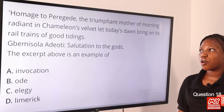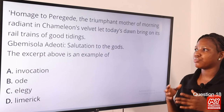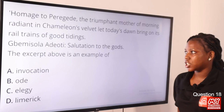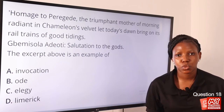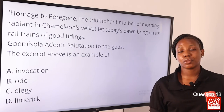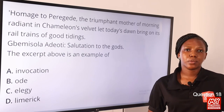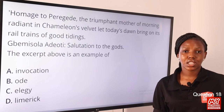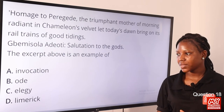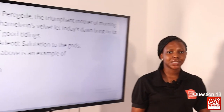Moving on to question 18. 'Homage to Perekwede, the triumphant mother of morning radiance in chameleon's velvet. Let this dawn bring on its real trains of good tidings.' — Bringing solar duties' salutations to the gods. The excerpt above is an example of dash. The answer is option A, invocation. Invocation is calling for the assistance or presence of a supreme being — here, Perekwede. An ode is a poem that praises something. Elegy is a lamentation for the dead. A limerick is usually humorous and is a five-line stanza. So the answer is option A, invocation.